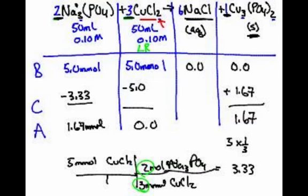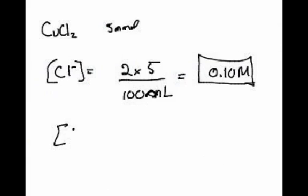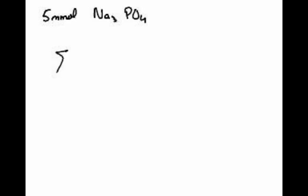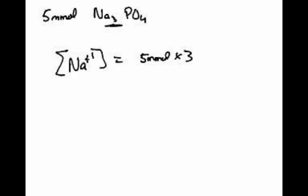So that's our chloride concentration. The copper is 0 — the concentration of Cu²⁺ is 0 molar, it's all used up. Now we have the sodium and the phosphate to deal with. The sodium has a little 3 there. We have 5 millimoles of Na₃PO₄, so the concentration of Na⁺ will be equal to 5 millimoles times 3, divided by 100 milliliters. That would be 0.15 molar.